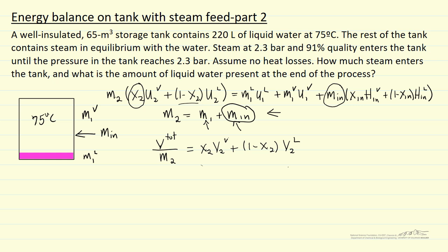We can look up this last equation, the final specific volume. So we know the conditions, 2.3 bar. So we know these values in the steam tables, our unknown is x2. So x2 appears in two of these equations. We're going to solve these equations simultaneously.